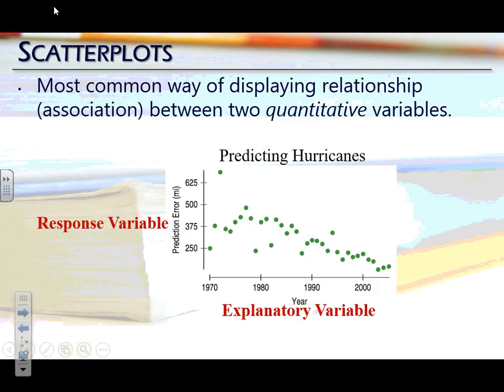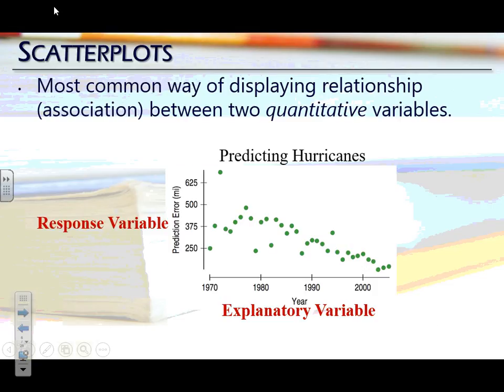We'll also talk about how to do this in the calculator later on, but for now when you create a scatter plot, it's going to be by hand. You're going to create your axes and plot the points manually. Later on, we'll do this in the calculator and you can just sketch what you see.